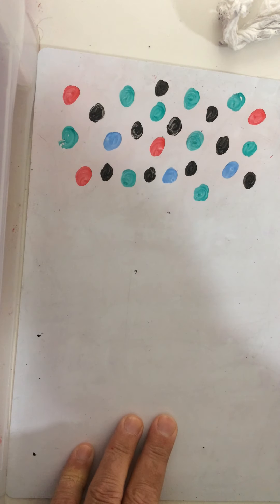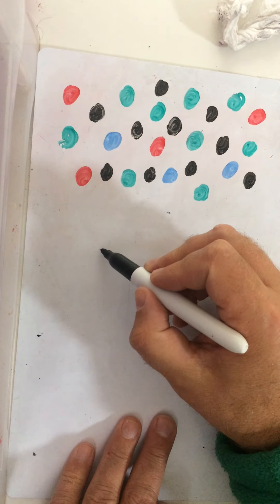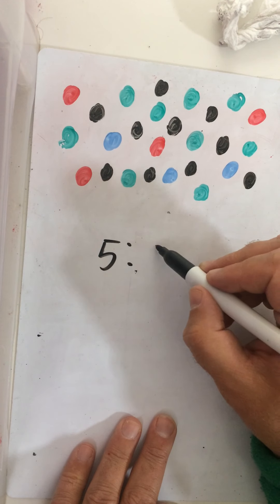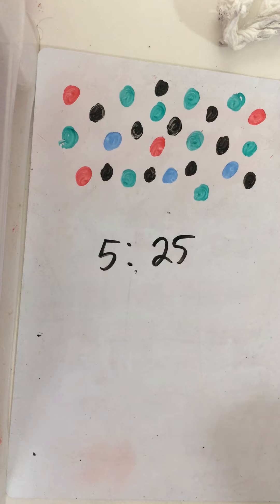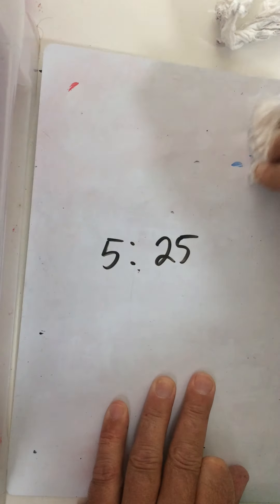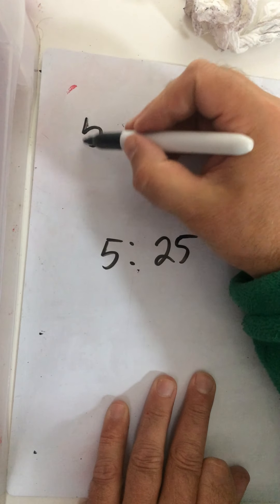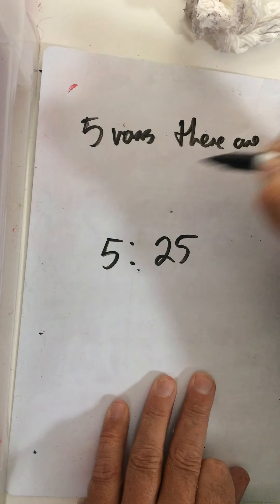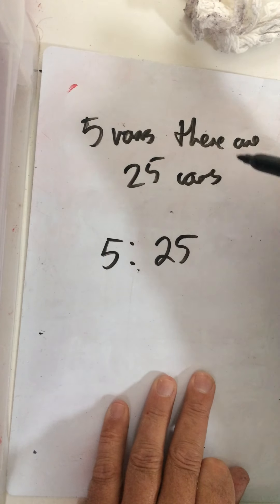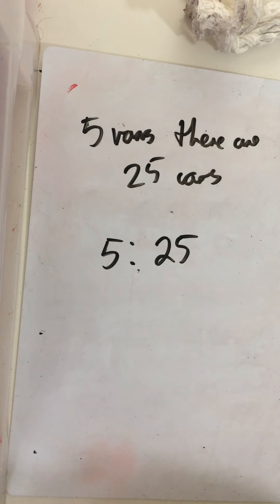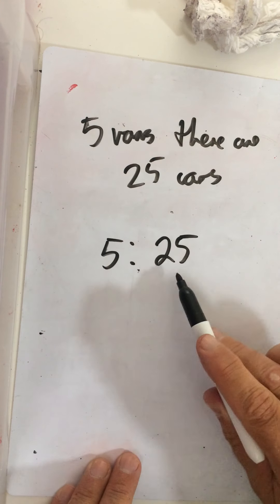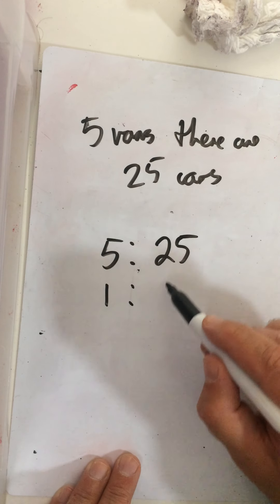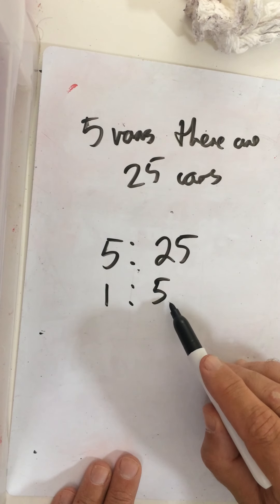Let's have a go: say if we had a ratio of five to twenty-five — this one could be in a car park, for every five vans there are twenty-five cars. So we could simplify that ratio. What goes into both five and twenty-five? Five goes into them both. How many times does five go into five? Once. How many times does it go into twenty-five? Five. So the simplest form of the ratio is one to five.